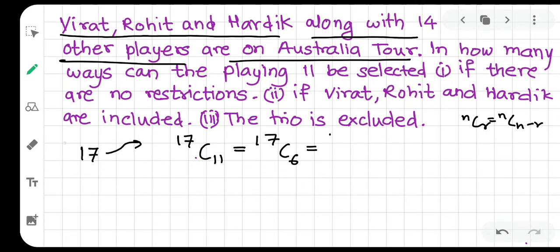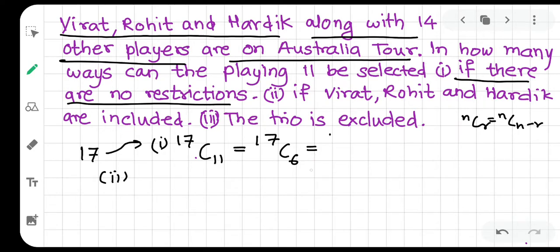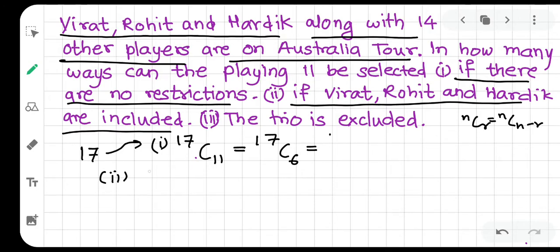That is the answer to the first part — no restrictions, 17 players, select 11. For the second part: if Virat, Rohit, and Hardik are included, those 3 are already selected. So from the remaining 14, we need 8 more. That gives us 14C8 as the answer to the second question.